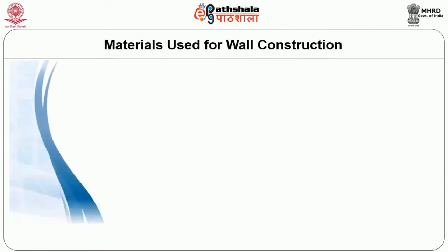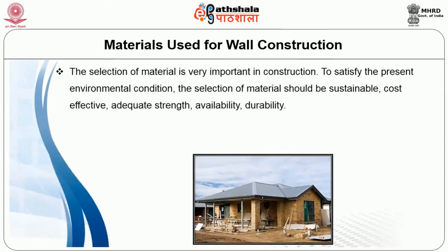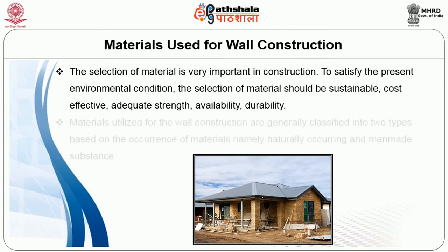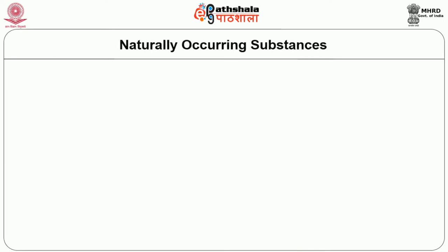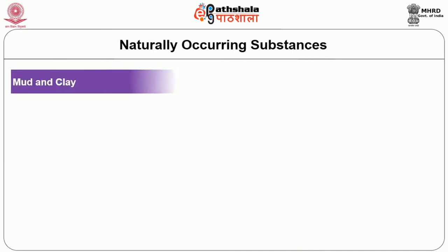The selection of material is very important in construction to satisfy the present environmental condition. The selection of material should be sustainable, cost effective, of adequate strength, availability and durability. Materials utilized for wall construction are generally classified into two types based on their occurrence: naturally occurring and man-made substances.